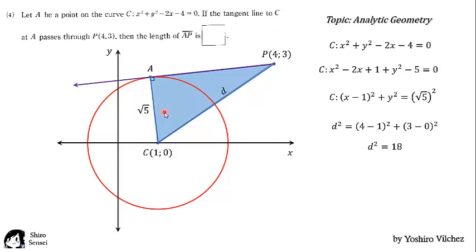So ap square plus square root of 5 square is equal to d square. So finally we get ap is equal to square root of 13. Next problem.